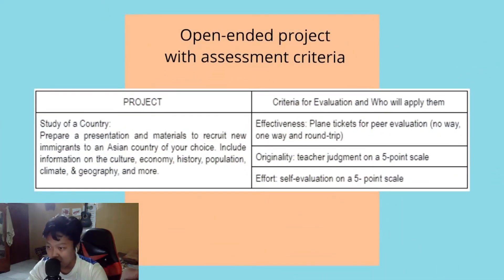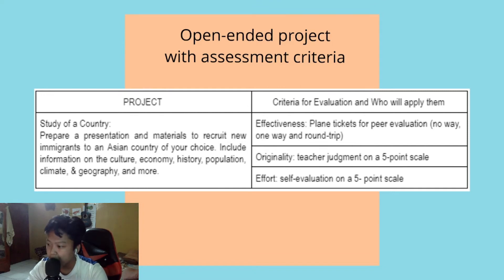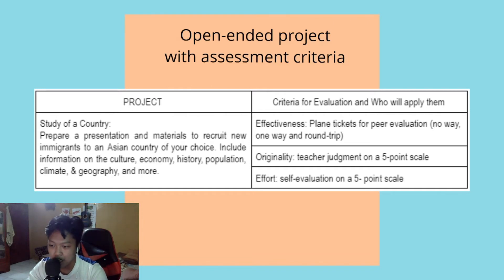The last table is an open-ended project with assessment criteria. For your project, for example, is a study of a country: 'Prepare a presentation and materials to recruit new immigrants to an Asian country of your choice. Include information on the culture, economy, history, population, climate, and geography.' The criteria for the project include effectiveness evaluated by peers using plain tickets — no way, one way, and round trip — originality scored by teacher on a five-point scale, and effort evaluated through self-evaluation on a five-point scale.